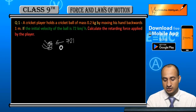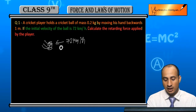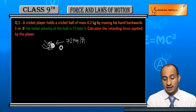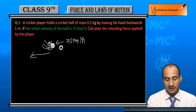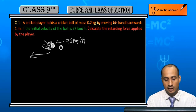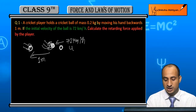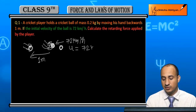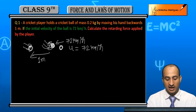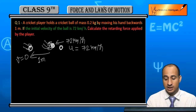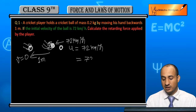When the player catches the ball, the initial velocity of the ball is 72 km per hour. As the player brings the ball to rest, the final velocity V is equal to 0.